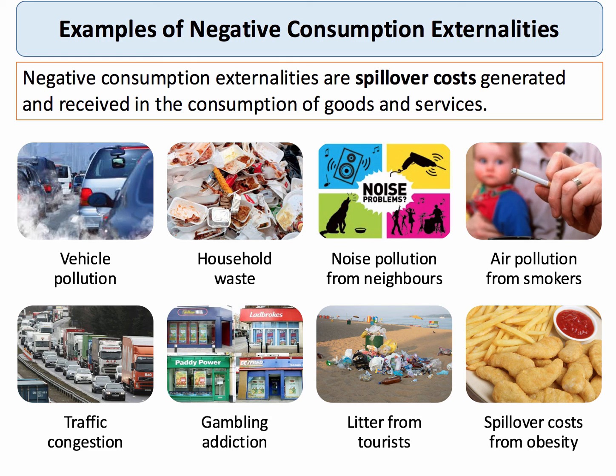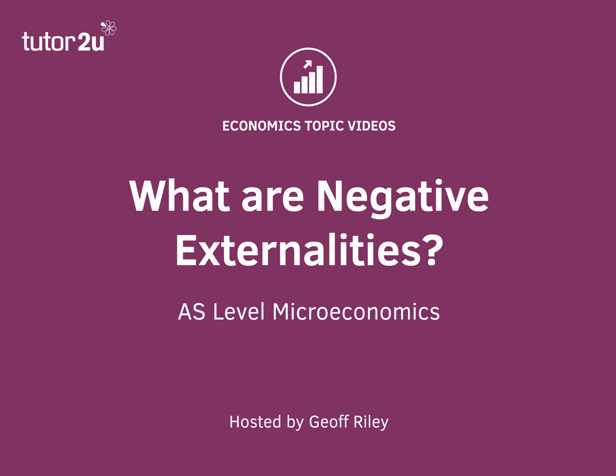You could also talk about the external costs arising from our lifestyle — in particular, the external costs to the taxpayer from the rise of type 1 and type 2 diabetes. So these are examples of negative externalities: things which create external costs to the rest of society.